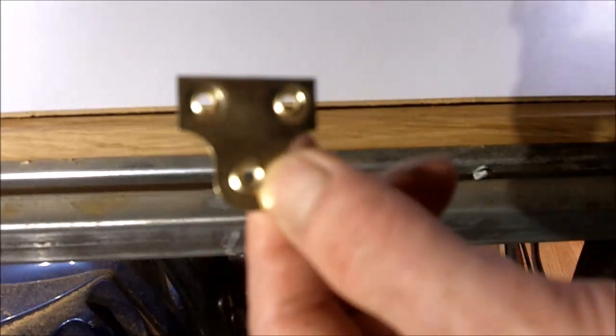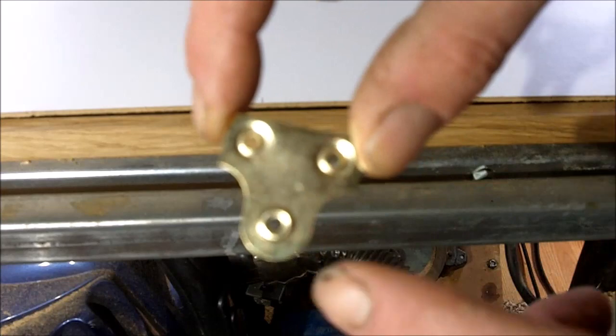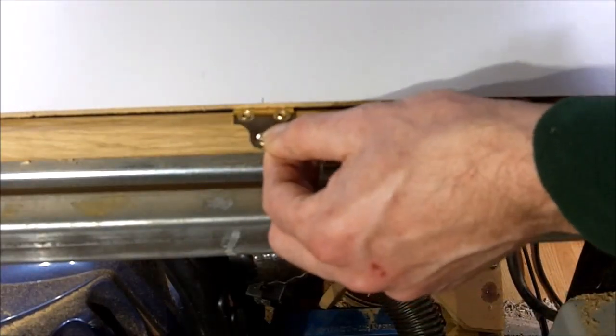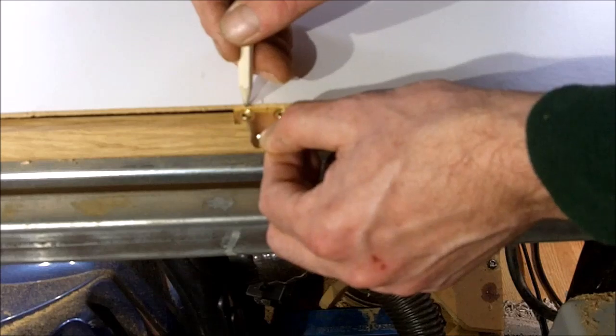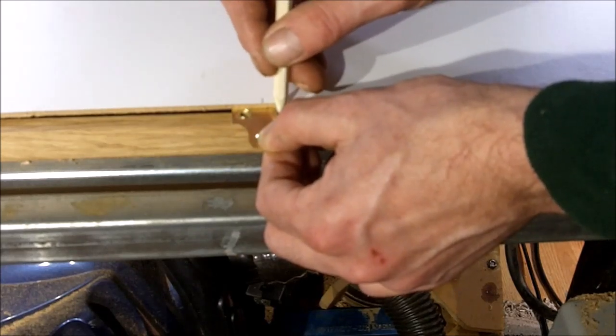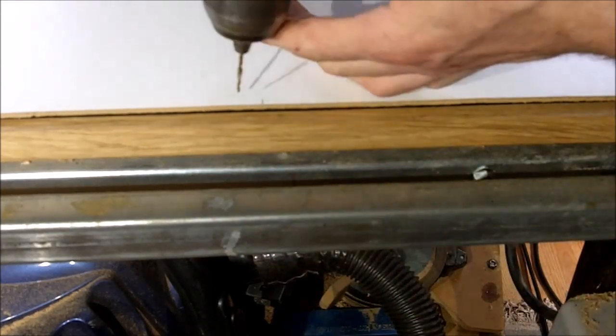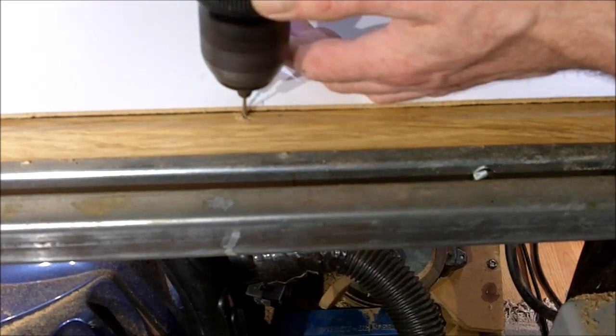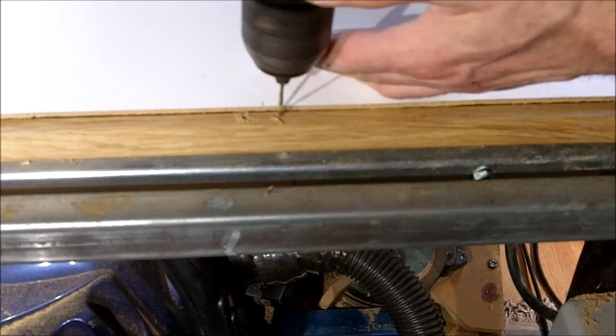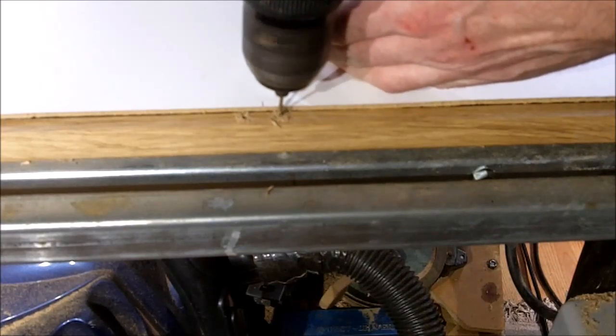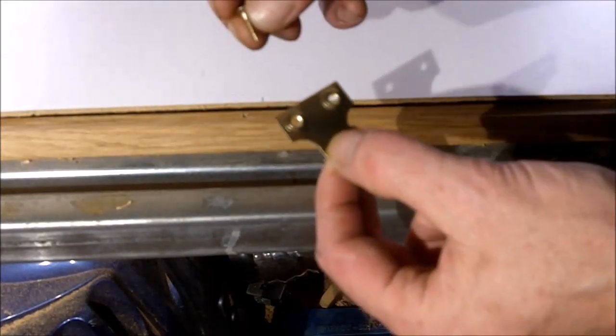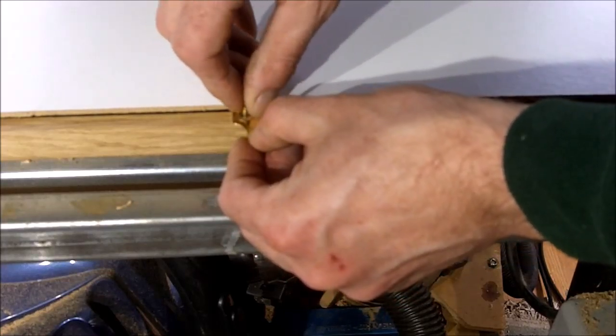Now that the back is on, the last job I have to do is attach these mirror hangers. They are a good way to securely attach our picture to the wall. Let's drill some pilot holes. Fix them on with some small screws. Our picture frame is finished now, we can hang it on the wall.